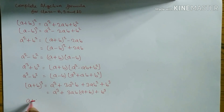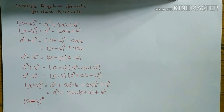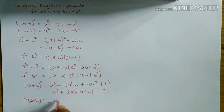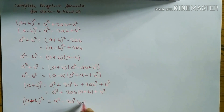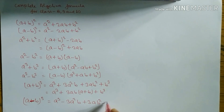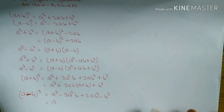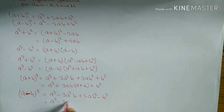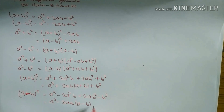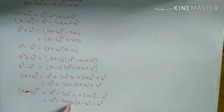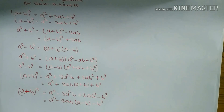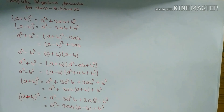Similarly, (a - b)³ formula is a³ - 3a²b + 3ab² - b³. If we take 3ab common here, the remaining terms give (a - b), but since minus is common the sign changes — minus minus becomes plus. So we get a³ - 3ab(a - b) - b³. These are the basic formulas of algebra. Thanks for watching my video.